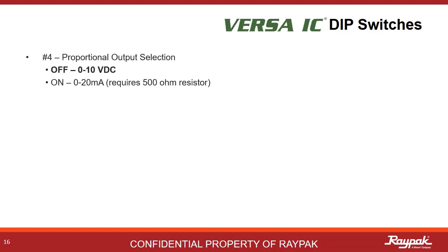Some three-way valves need a 0 to 20 milliamp signal instead of a 0 to 10 volt DC signal. If the valve selected needs a milliamp signal, then turn on Dipswitch number four. A 500 ohm resistor will be required.